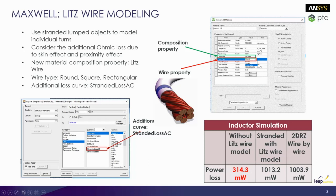So what is Litz wire? Litz wire is a special type of multi-strand wire or cable used to carry AC currents at radio frequencies. These types of wires are used for about 1 MHz and are designed to reduce the skin effect and proximity effect losses in conductors. Litz effects, including skin and proximity effect, increase power loss in windings at high frequencies. Accurately analyzing these losses is very important in the design and optimization of power components.